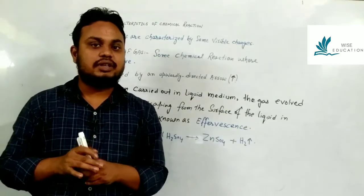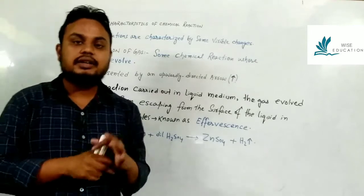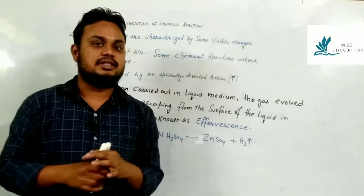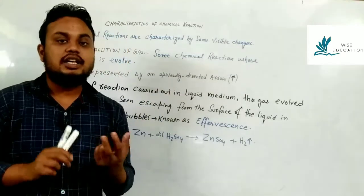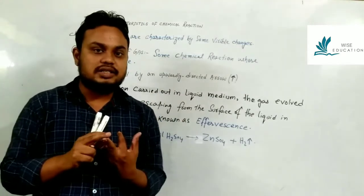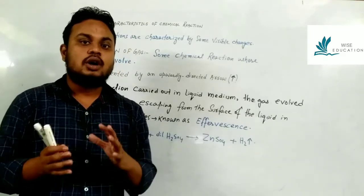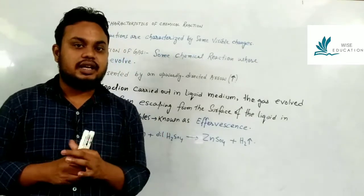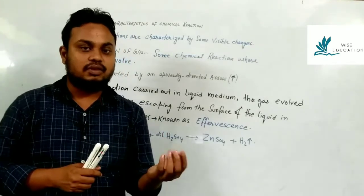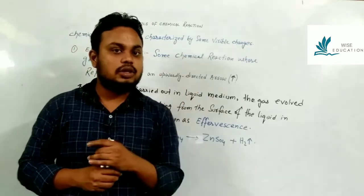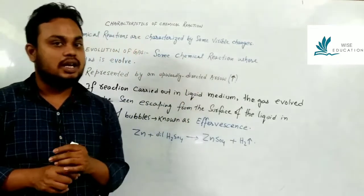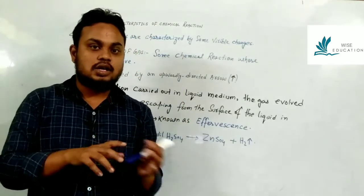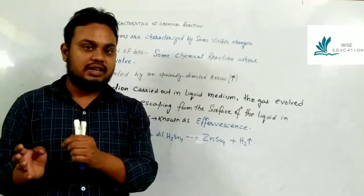Now the characteristics of chemical reactions. During chemical reactions we observe some visible changes, like change in color, formation of a precipitate, formation of bubbles, evolution of gas, or a change of state such as solid to liquid.